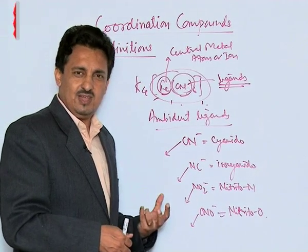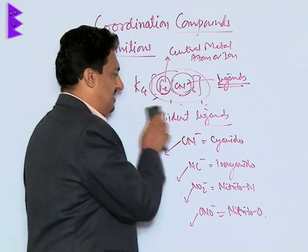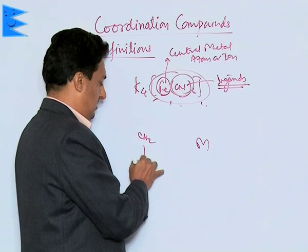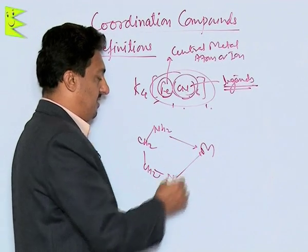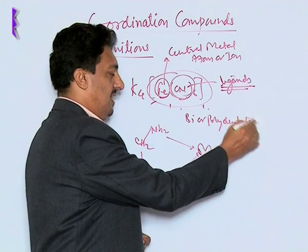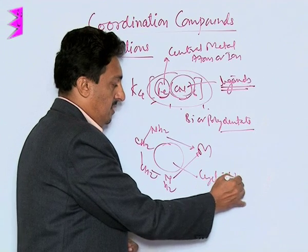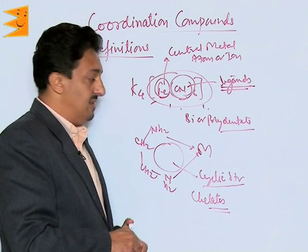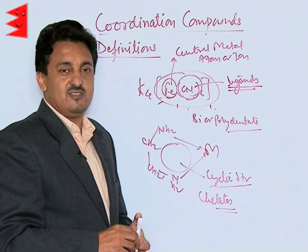The number of bonds a ligand forms is called its denticity. If a ligand forms one bond it is monodentate with denticity one; if two bonds, bidentate with denticity two. When a bidentate or polydentate ligand forms bonds with a metal ion, they form five- or six-membered cyclic structures called chelates. Complexes containing chelates are very stable, and this extra stability effect is called chelation.